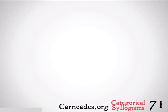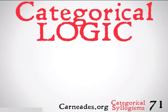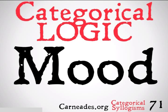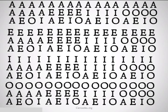Welcome back to 100 Days of Logic with 90 Second Philosophy and current80s.org. Today we're going to be continuing with Categorical Logic and Categorical Syllogisms, looking at the mood of Categorical Syllogisms.